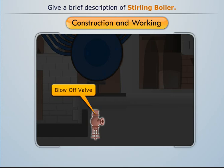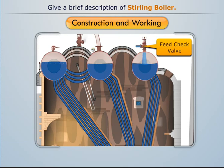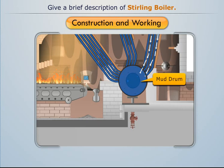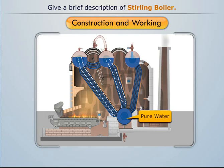Water is fed through the feed check valve to steam drum 3, which then passes through the bent tubes to the mud drum. In the mud drum, the foreign particles get settled down and are removed through the blow-off valve at regular intervals. Thus, pure water passes upwards through the bank of bent tubes to the other drums.